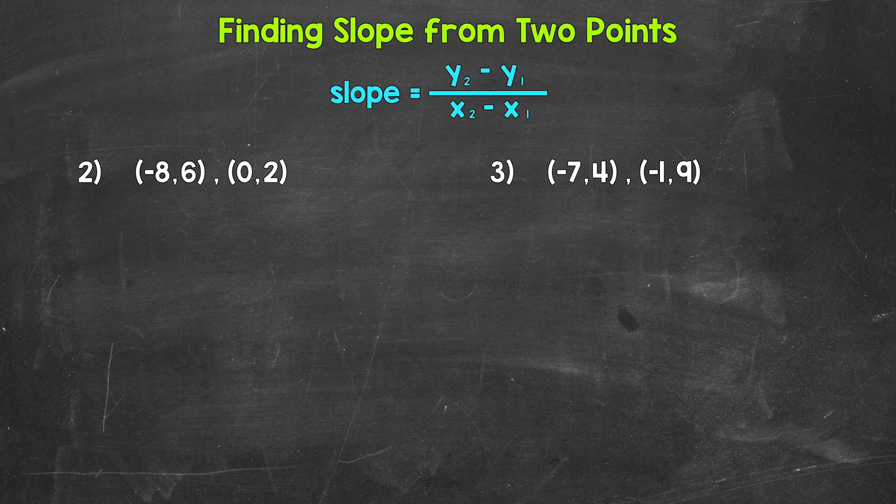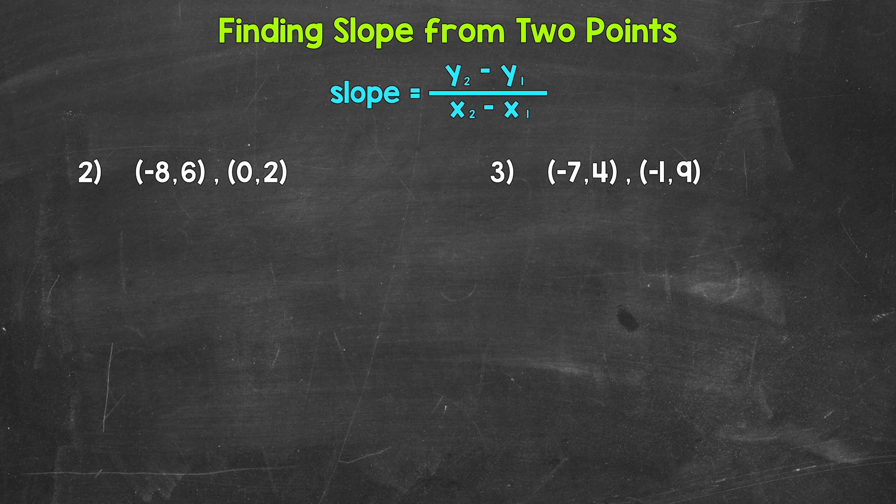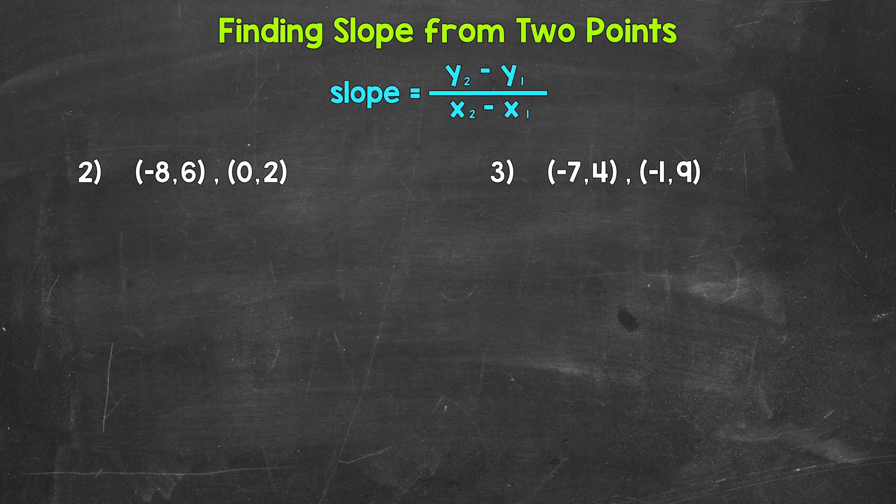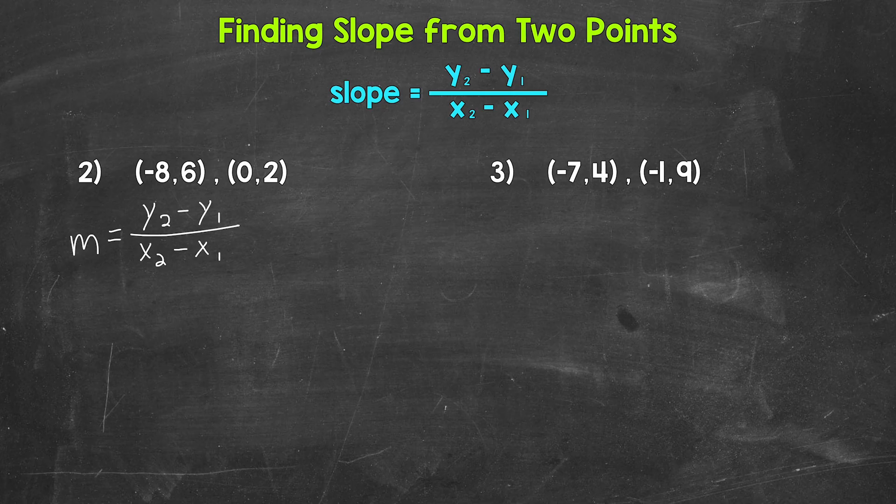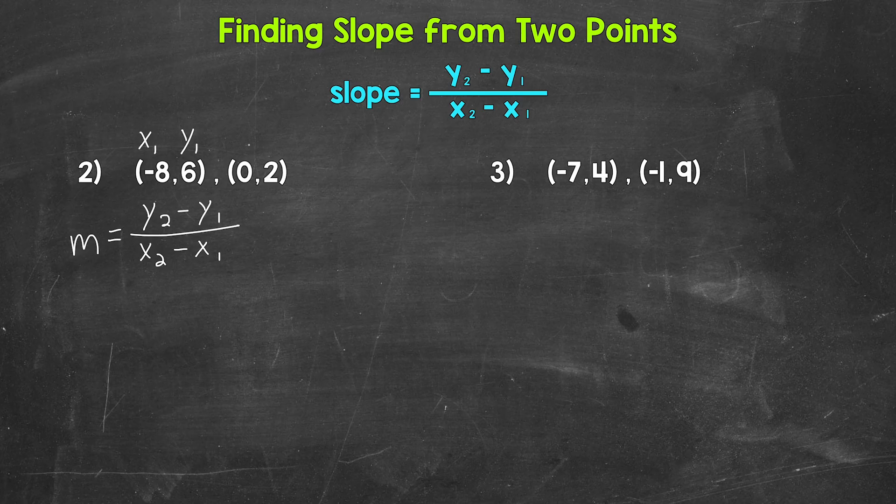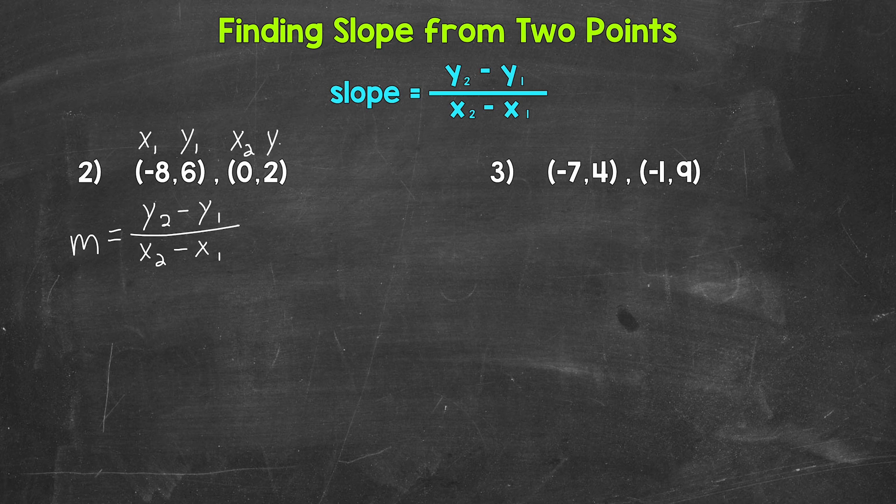Taking a look at numbers 2 and 3, we are given the coordinates of two points that a line passes through. We need to find the slope of each line using the given points. Let's jump into number 2 where we have negative 8,6 and 0,2. So slope equals y2 minus y1 over x2 minus x1. Let's make negative 8, x1 and 6, y1. Then 0, x2 and 2, y2.